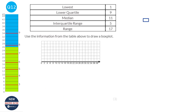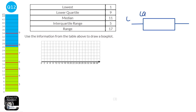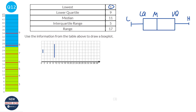A box plot starts with the lowest value, then goes to the lower quartile, then the median, then the upper quartile, then the highest value. The lowest value is 1, so we put a little line at 1. The lower quartile is 9, which is where the box starts — so we start the box there and connect them up. The median is 11, and we just mark that on.